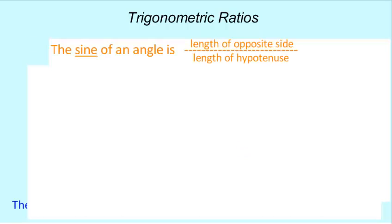These ratios have names. The sine of an angle, S-I-N-E. So if you're working off one of the acute angles, the sine of the angle is the length of the side opposite the angle divided by the length of the hypotenuse for the triangle.